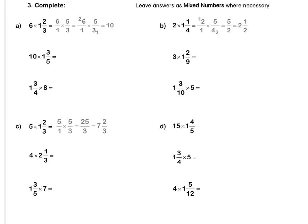Question 3: leave answers as mixed numbers when necessary. Question A — we put 6 over 1, we rewrite our mixed number as an improper fraction. Then we simplify in our question, dividing top and bottom by 3, and we multiply out to get 10 wholes. Press pause to complete question A by yourself.